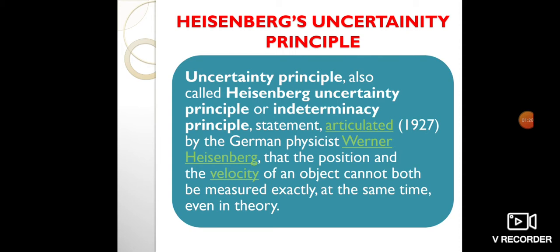After de Broglie proposed the wave nature of matter, many physicists, including Schrödinger and Heisenberg, explored the consequences. The idea quickly emerged that, because of its wave character, a particle's trajectory and destination cannot be precisely predicted for each particle individually.